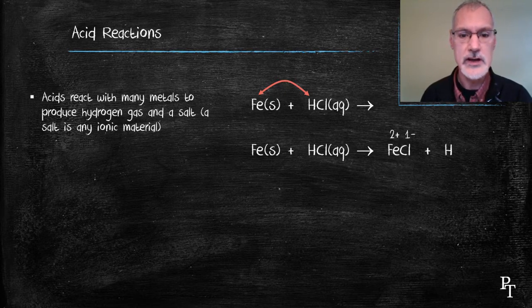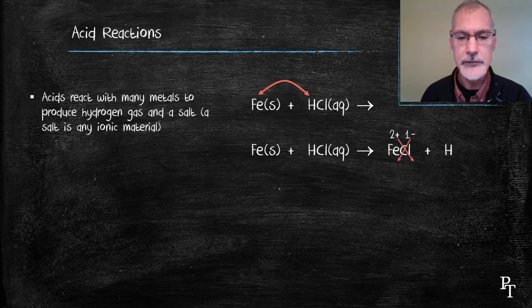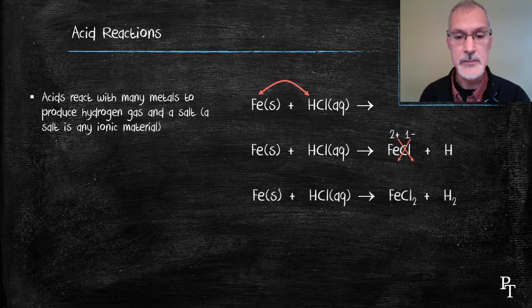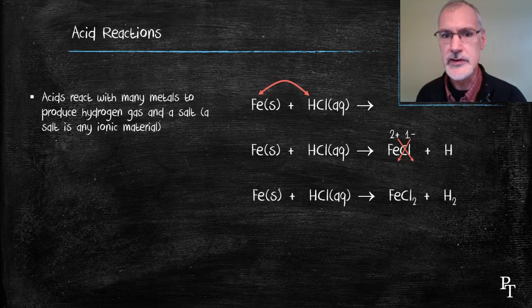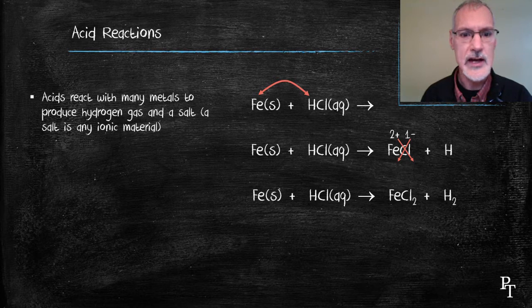Iron typically has a charge of plus two and chlorine minus one. Applying the crisscross rule or balancing their charges, I'm going to need to have two chlorines to balance that. Also, the hydrogen that's produced is diatomic because it's hydrogen gas. So, at this point, I have the equation completed, but it's not balanced.